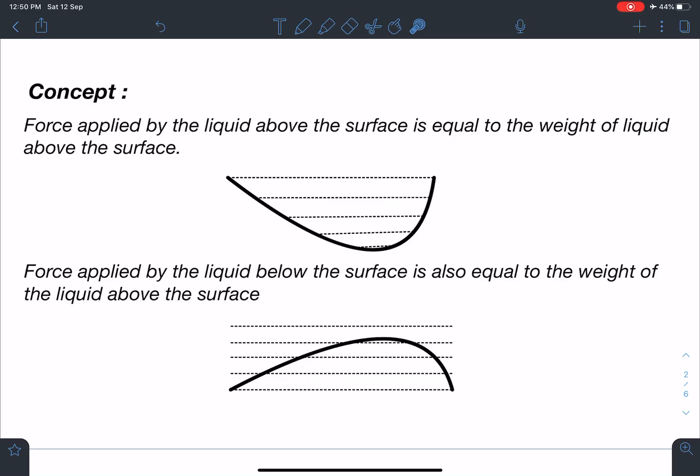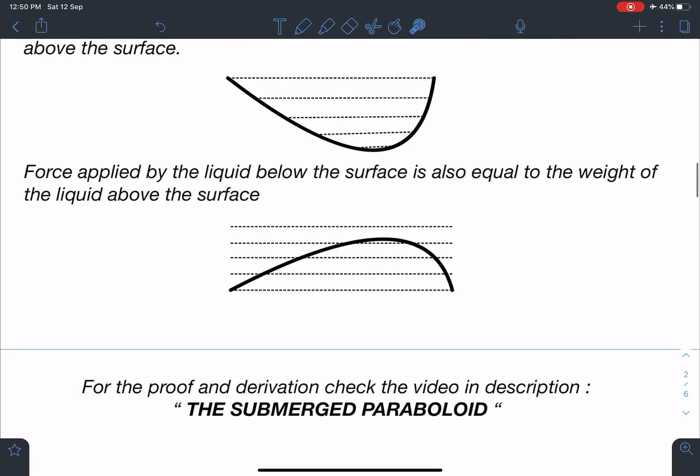Similarly here, force applied by the liquid below the surface is also equal to the weight of the liquid above the surface. Now this is slightly difficult to digest, but you can see if the surface has negligible thickness, then pressure on both sides is going to be equal. And in that situation, whatever force the lower half is applying on the surface, the same force will be applied by the upper surface also. So in this situation also, even though liquid is present below the surface, its numerical value will be equal to this much weight of the liquid.